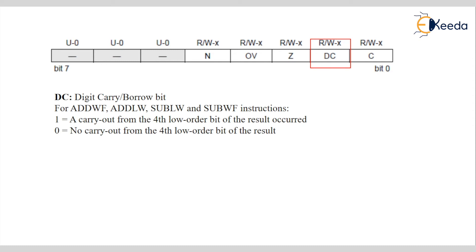Next is the Digital Carry flag. When a carry is generated from the fourth lower-order bit of the result, the Digital Carry flag will be 1. If there is no carry out from the fourth lower-order bit of the result, it is 0. The same instructions are used for both addition and subtraction. If a borrow is generated from the fourth lower bits, this flag is also high; otherwise it is low.